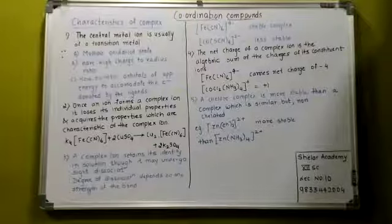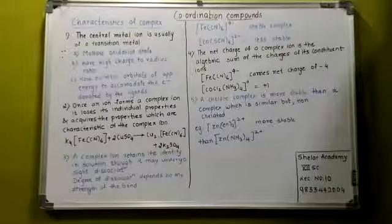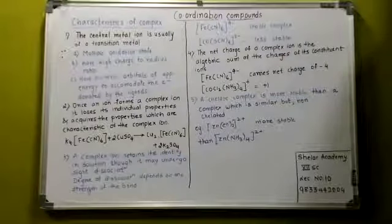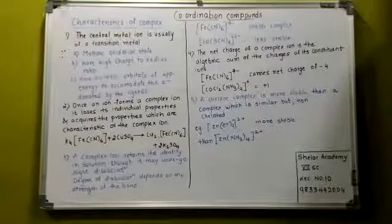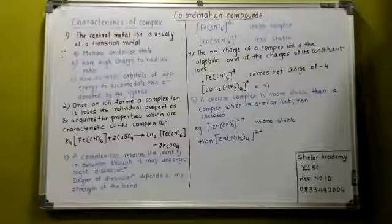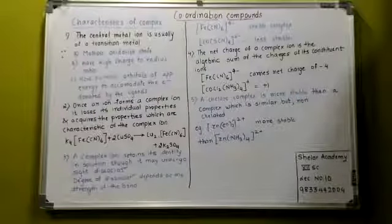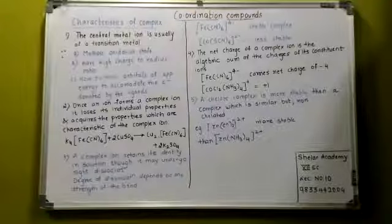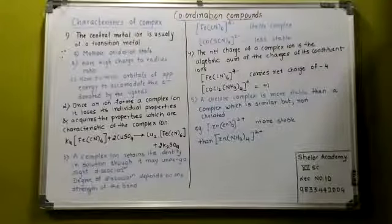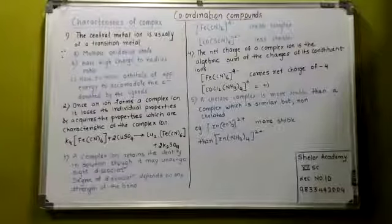Now similarly, it is [CoCl2(NH3)4]+, the next example. It comes to be plus 1. Why is it plus 1? Because ammonia is a neutral ligand, so it is x for cobalt plus Cl2, so minus 2. x minus 2 is equal to plus 1, so x will be plus 3. So this is how you can find the net charge on the complex.